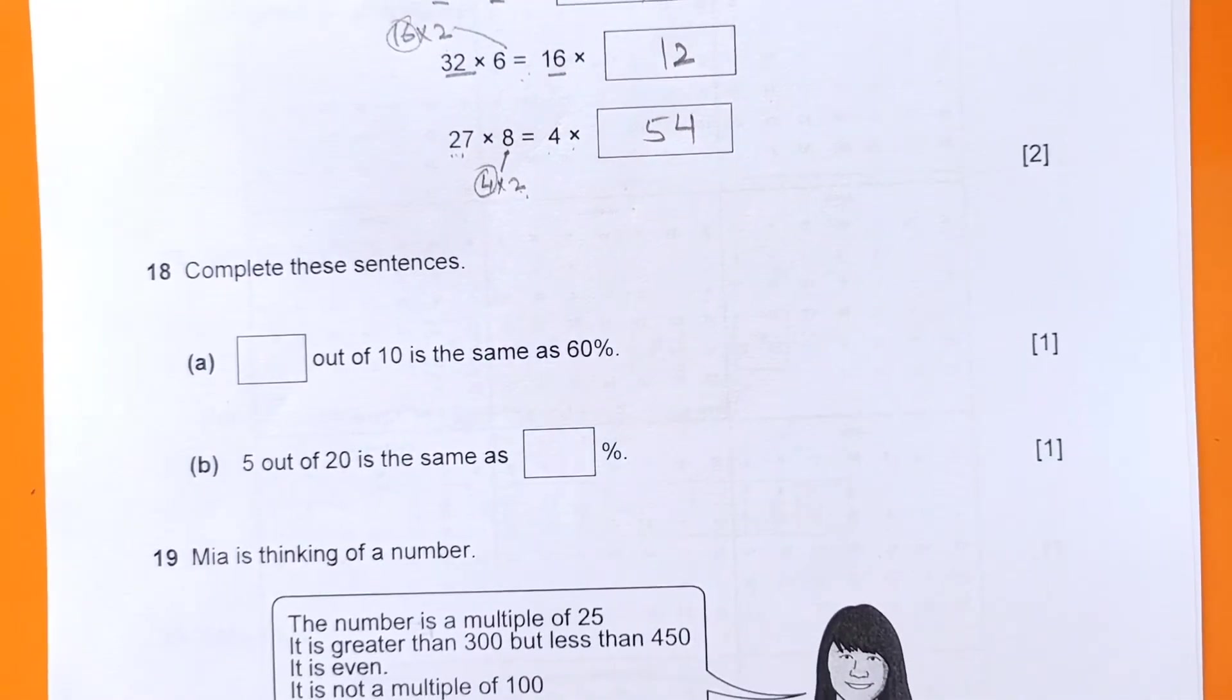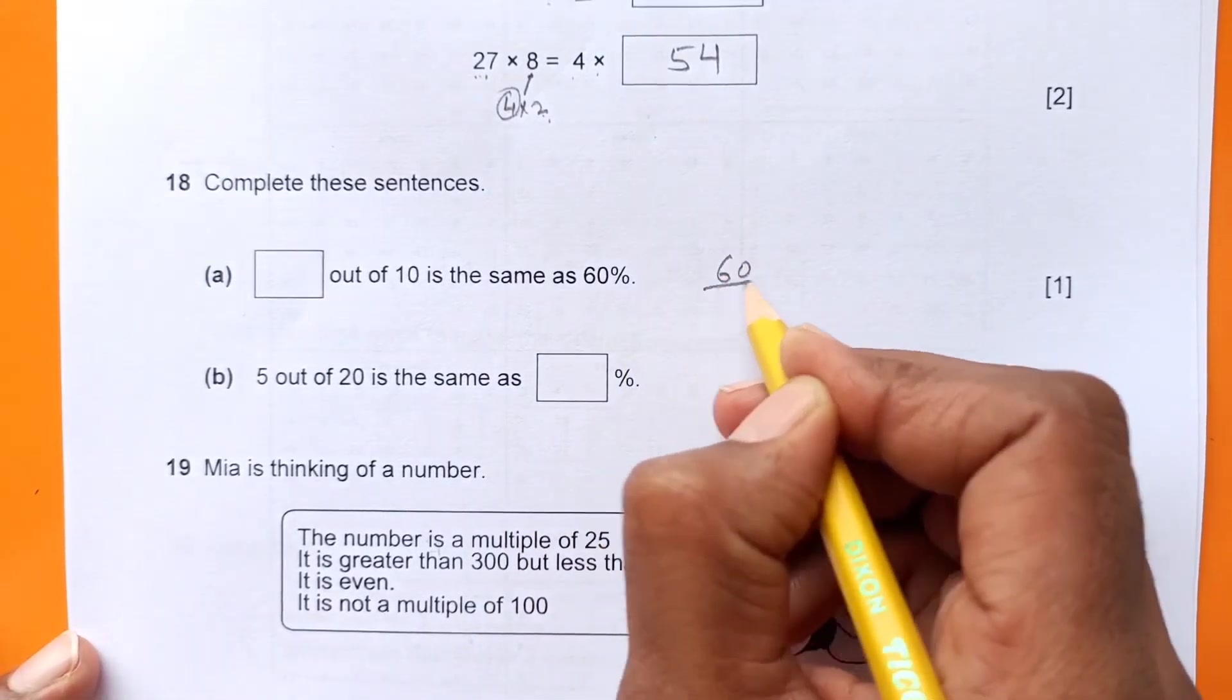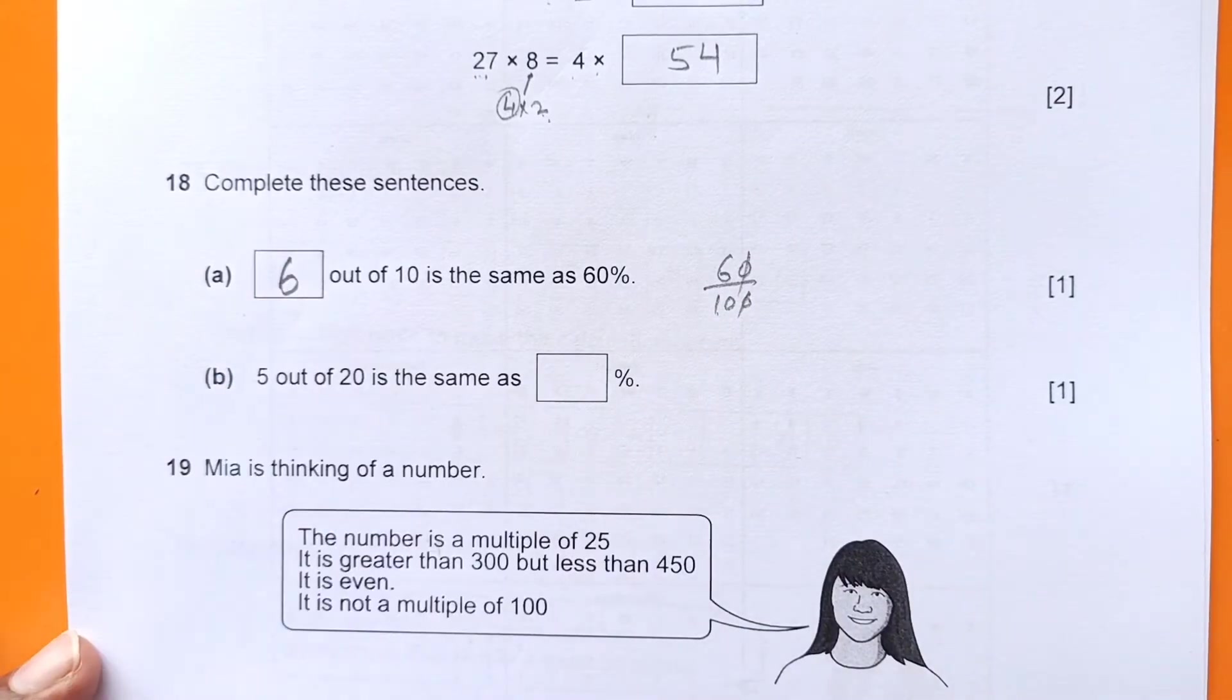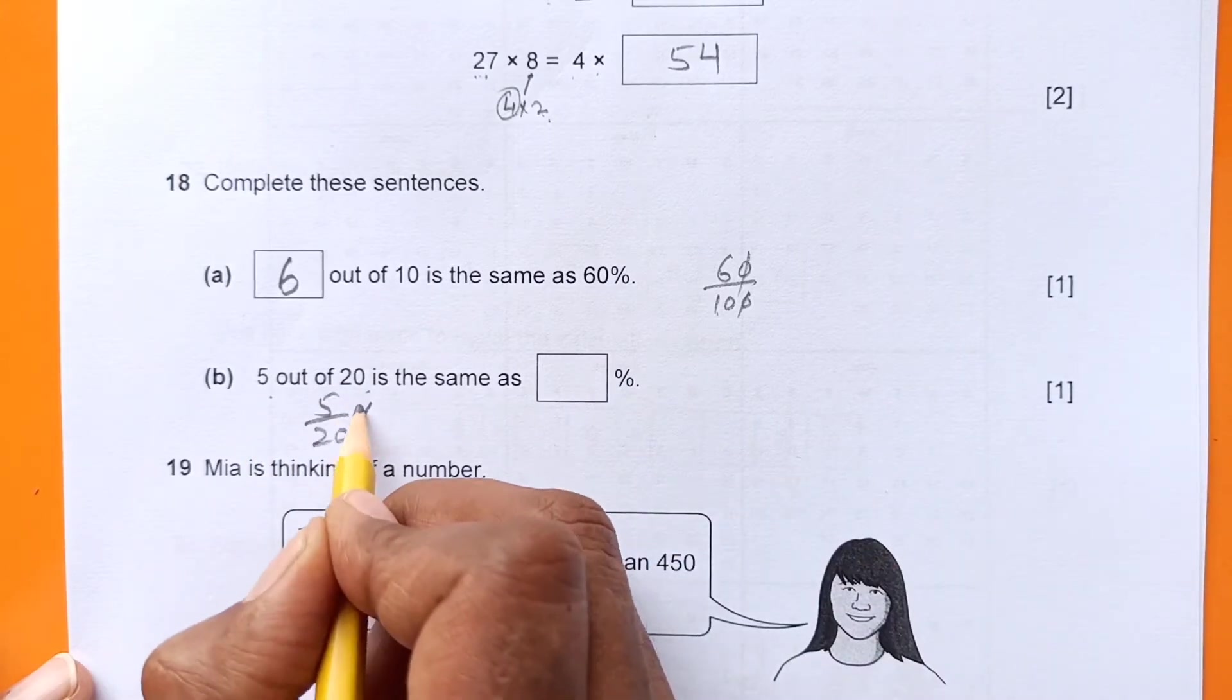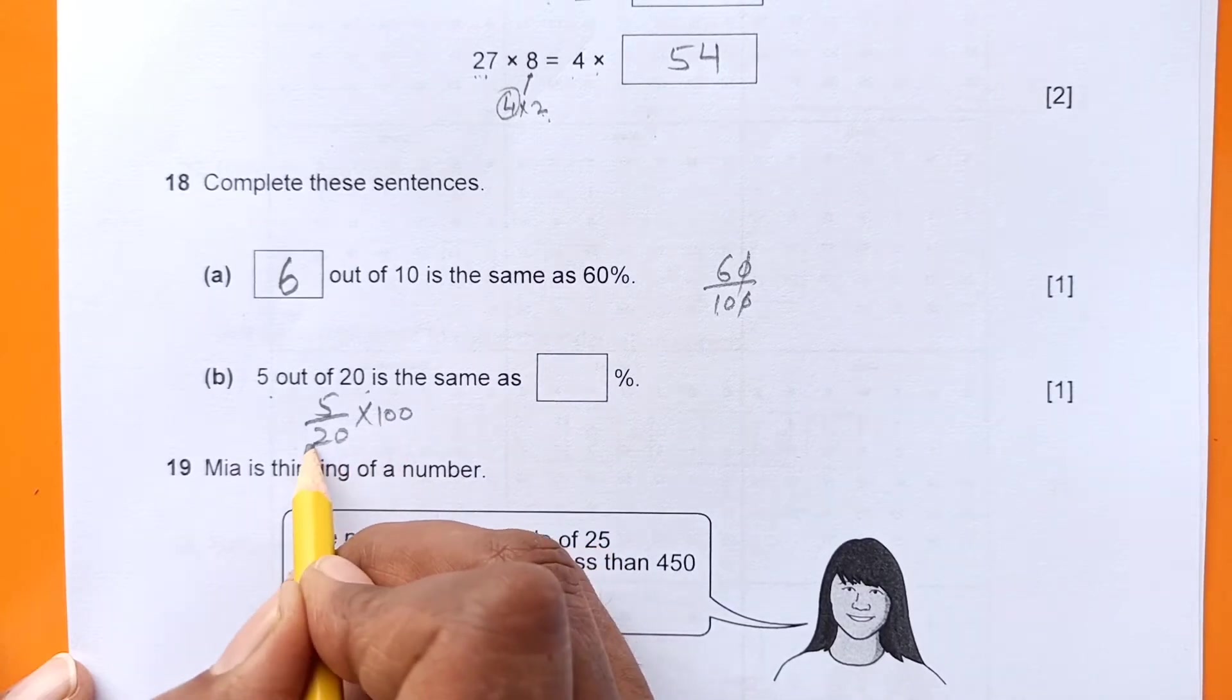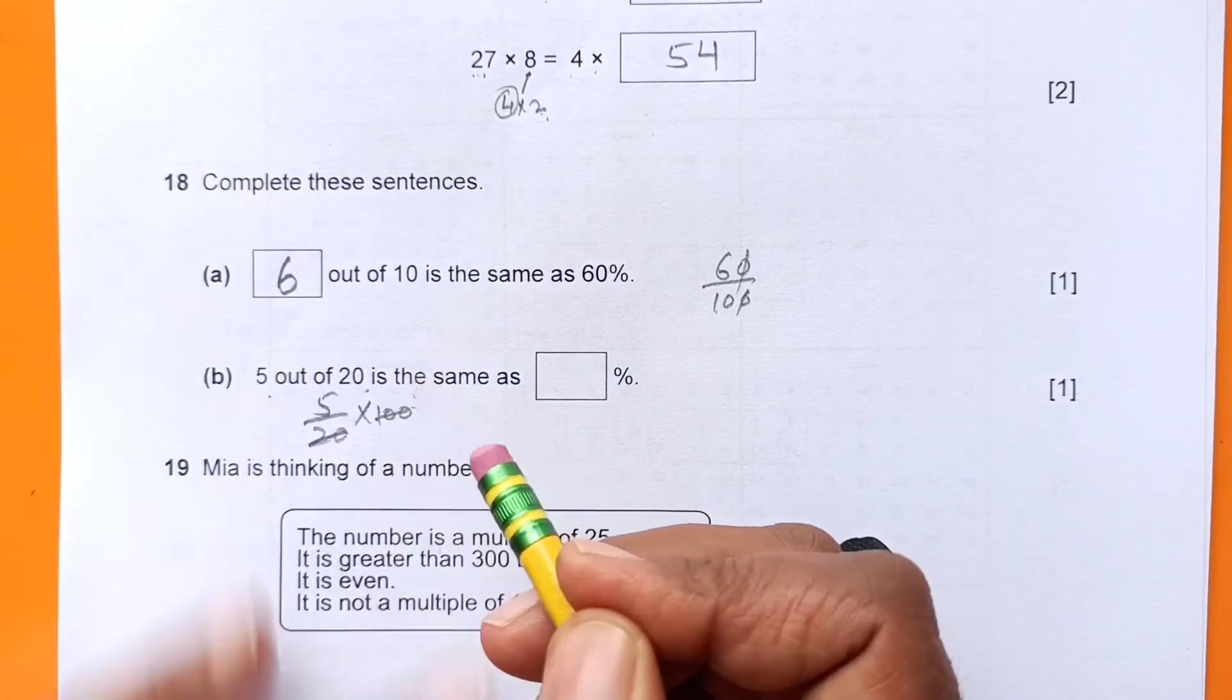Number 18: Complete these statements. Blank out of 10 is the same as 60 percent. So 60 percent means 60 over 100, that means 6 out of 10 will go here. 5 out of 20 is the same as blank percentage. To convert into percentage, we can just multiply by 100.